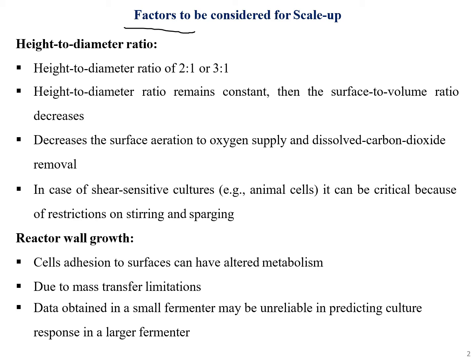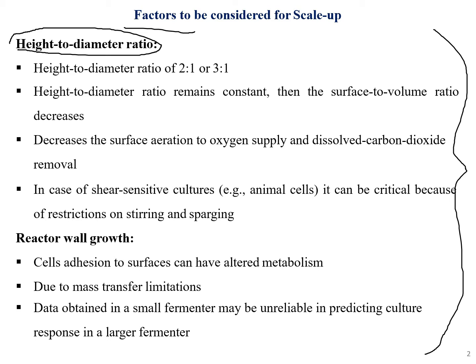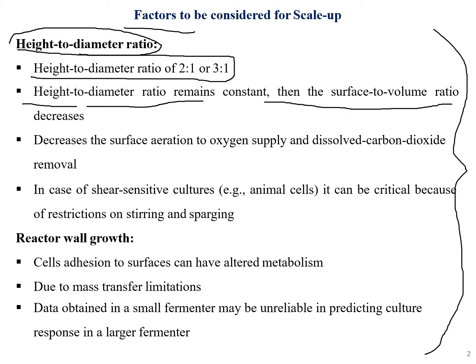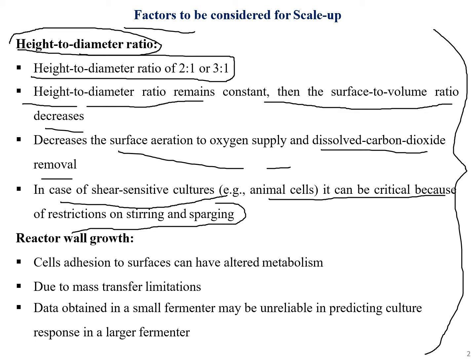There are lots of factors, and we'll go through them one by one. The first factor is the height to diameter ratio. A height to diameter ratio of 2:1 or 3:1 is to be maintained. The height to diameter ratio remains constant, and the surface to volume ratio decreases. It also decreases the surface ratio relative to oxygen supply and dissolved carbon dioxide removal.